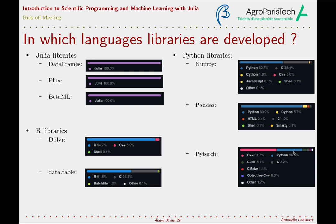PyTorch, a leading Python library for machine learning, has only 36% of its code written in Python. The same situation exists for R — Datatable, the equivalent of Pandas, has similar patterns. By contrast, Dataframes, Flux (a machine learning library in Julia), and BetaML (our own machine learning library) are all 100% Julia. This really shows that to write efficient libraries in Julia, you can use Julia itself — you don't need to resort to C or C++.